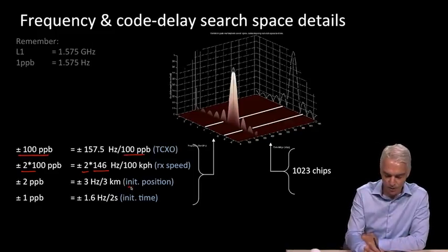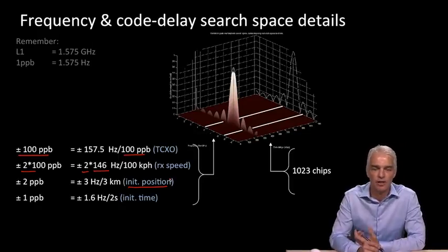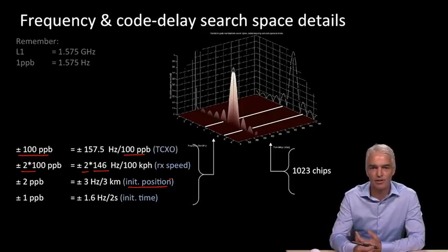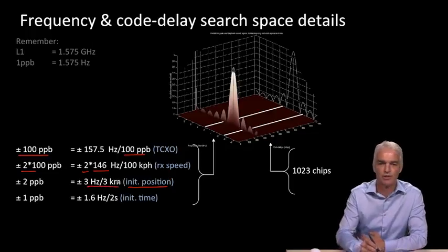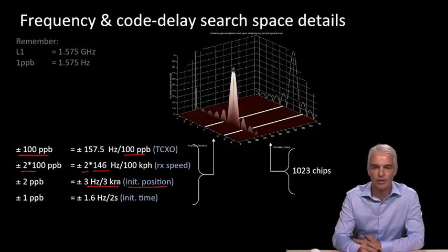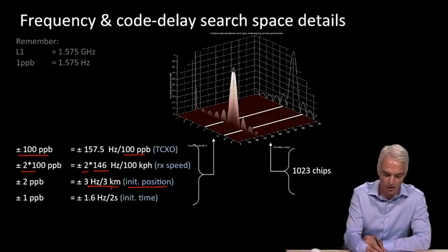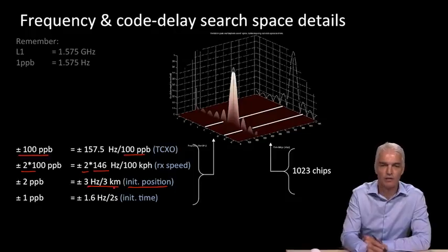So we've taken care of the first two terms. Now what about the error with respect to the initial position of the receiver? We get a position from a cell tower, and that will be the position of the cell tower itself. We won't actually be at that position, we'll be somewhere nearby, maybe a few kilometers away. When we work out what the expected doppler was at the cell tower's location, how much error is that with respect to our position? We say it's 3 hertz for 3 kilometers. 3 kilometers is typically the distance you can receive a cell tower signal up to before you get handed over to another cell tower.